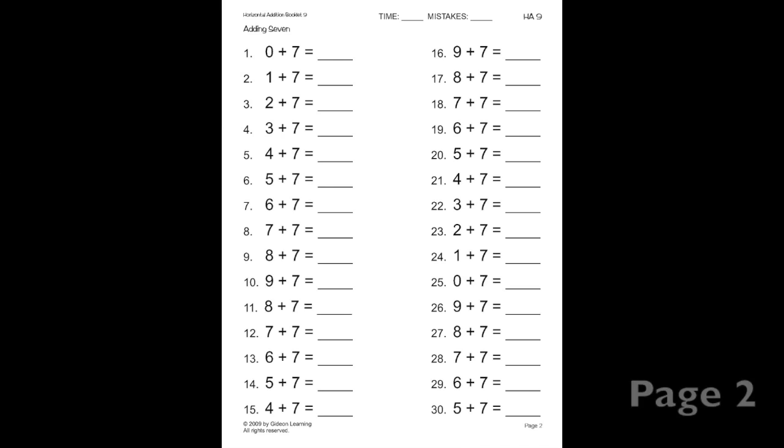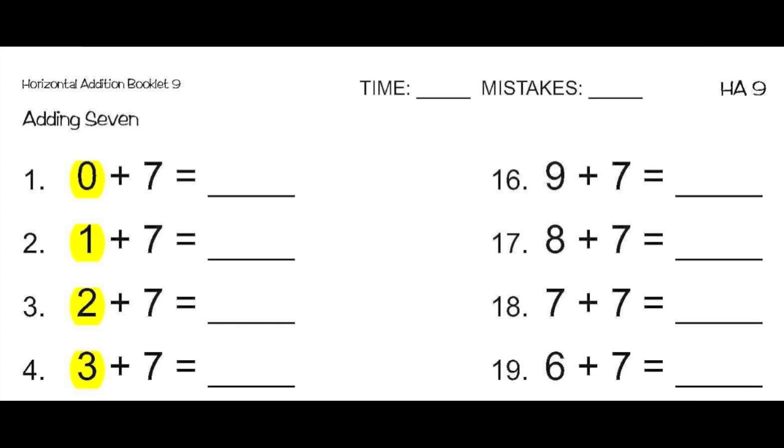So on this page, we're going to work on adding 7. Before we start, notice that this page goes in order. So let's do the first one. Here we have 0 plus 7, which equals 7, because anything plus 0 is the same number.